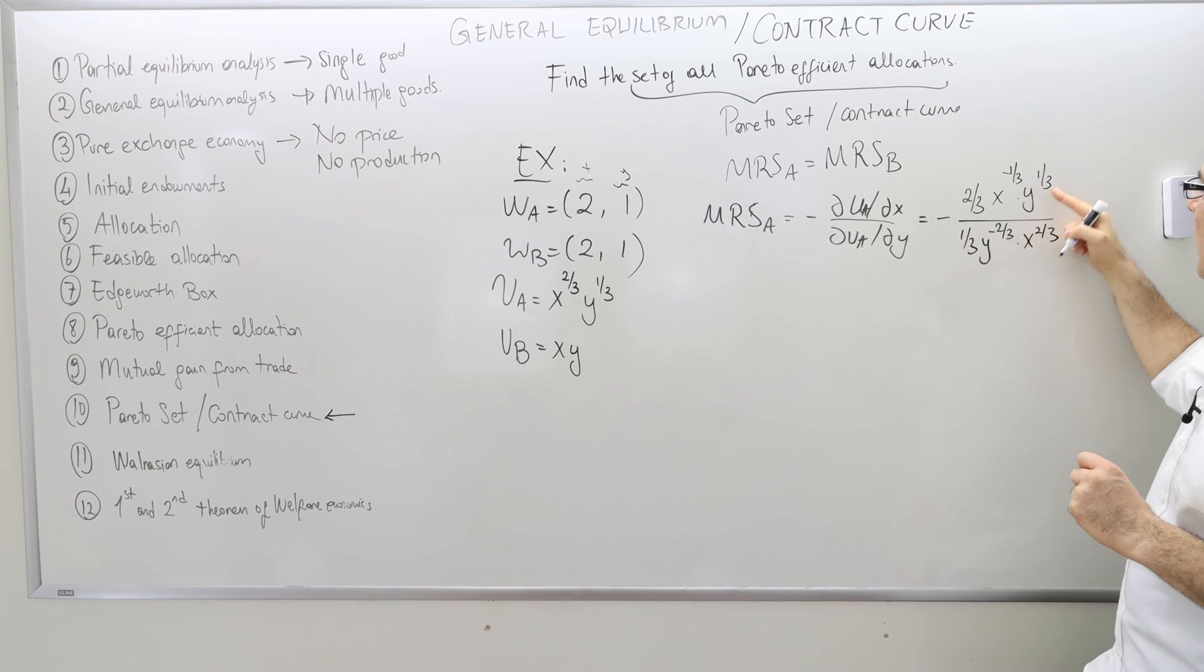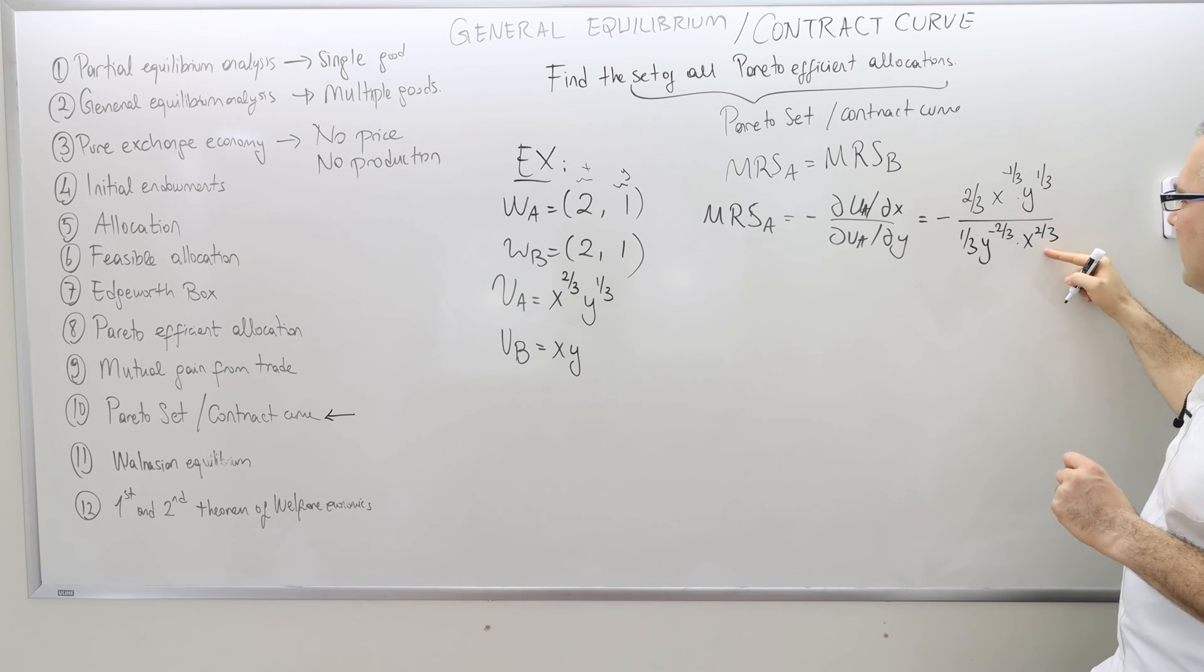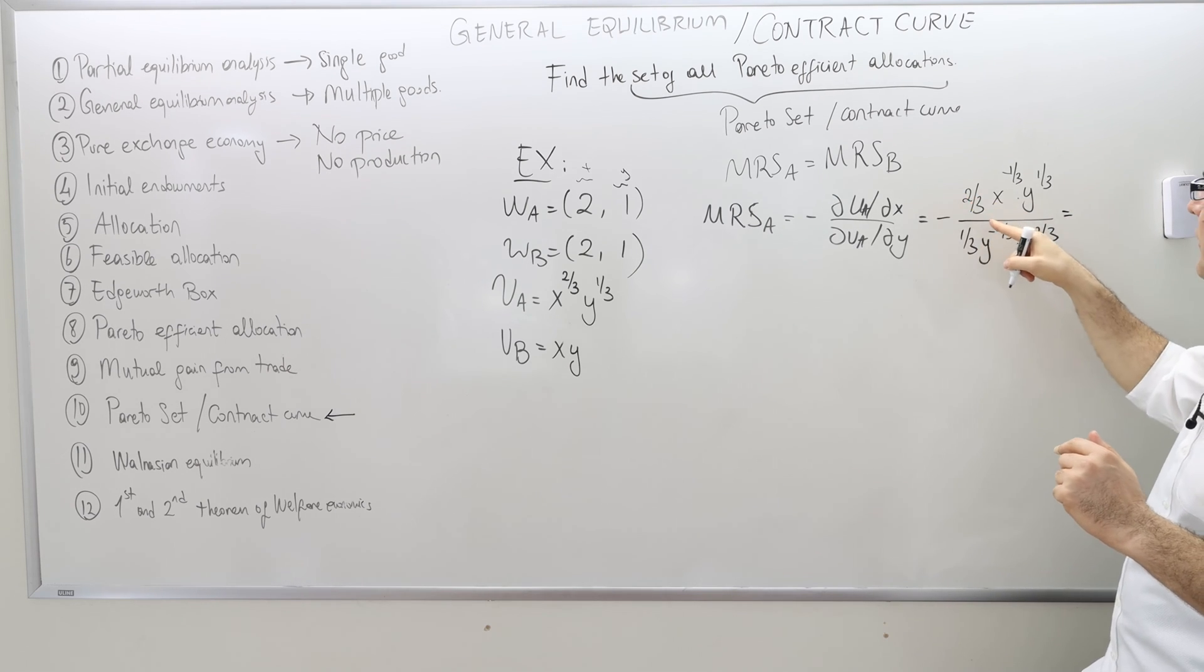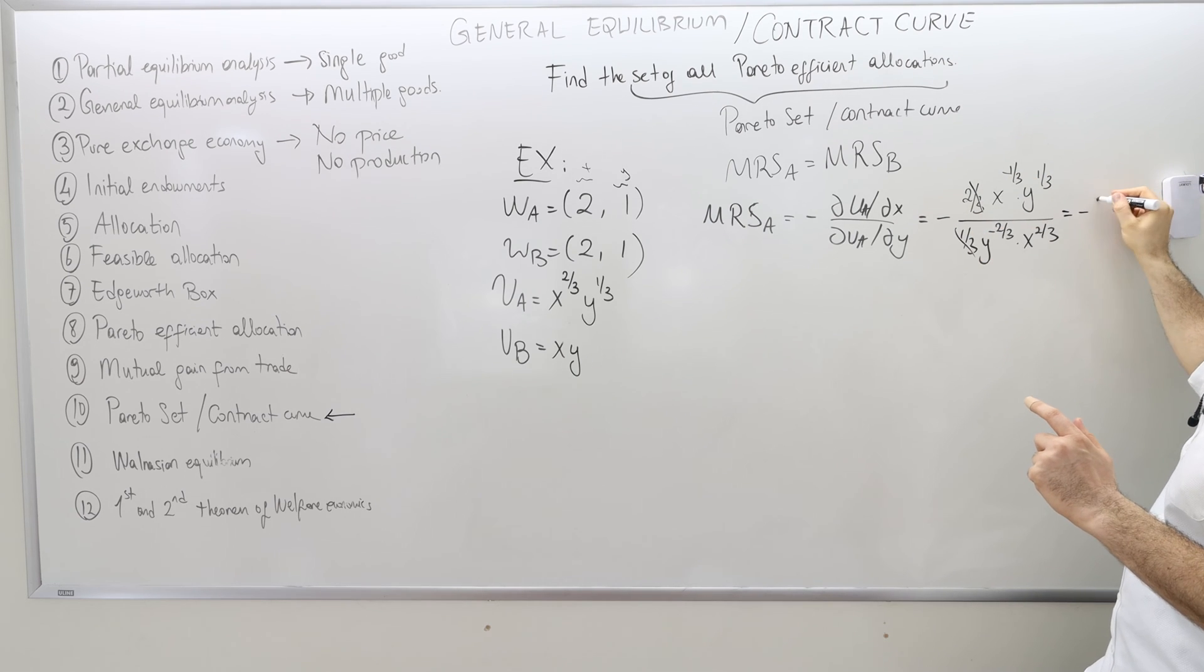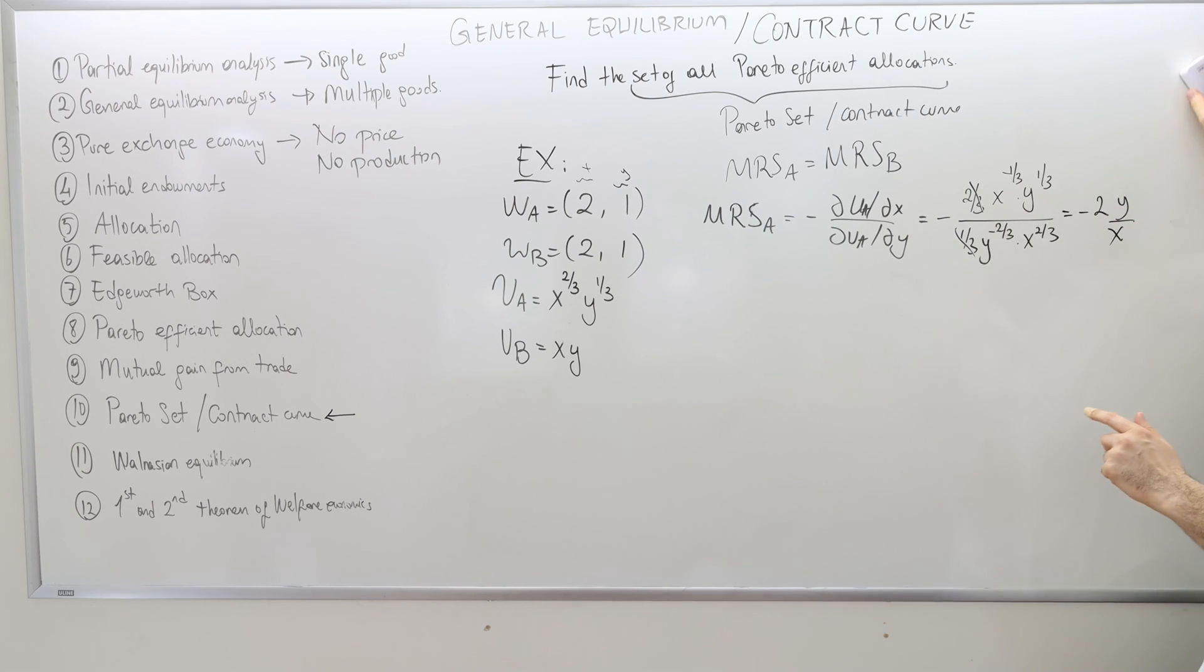So we send y up and then x down, so x to the power 1, y to the power 1. The 2/3 and 1/3 cancels, or 1/3 will cancel out. So it's minus 2 y_A over x_A. At this point, it's a good idea to put a subscript just to denote this is agent A's y and this is agent A's x.